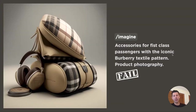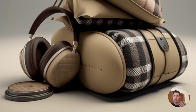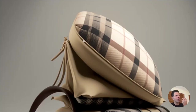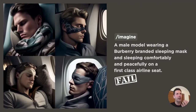Another fail: 'accessories for first class passengers with the iconic Burberry textile pattern, product photography.' It's still pretty amazing that AI is generating this, but looking closer I don't know if it's a pillow or a bag — it has some belt system to fasten it. The headphones were kind of cool and gave me a cue that headphones would be a great idea, but together in the layout it wasn't specific enough as an object — I didn't know if it was a purse or a pillow.